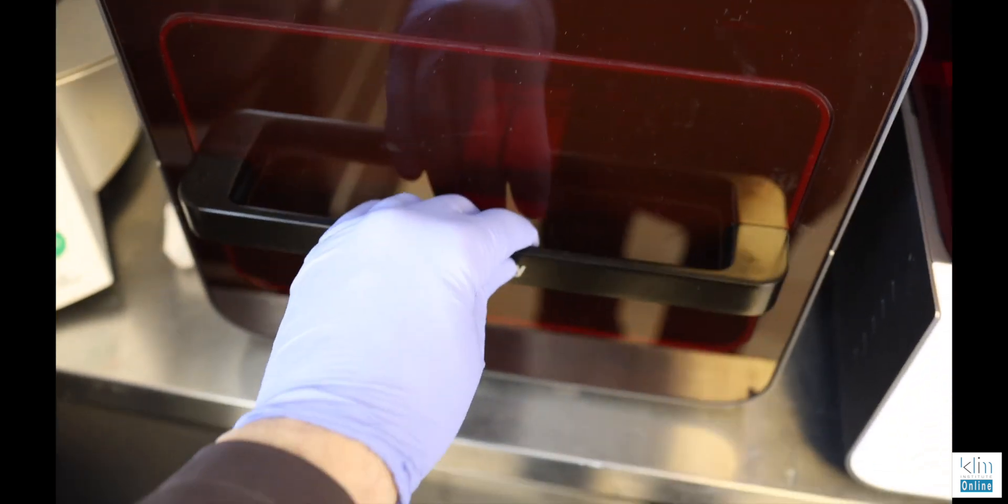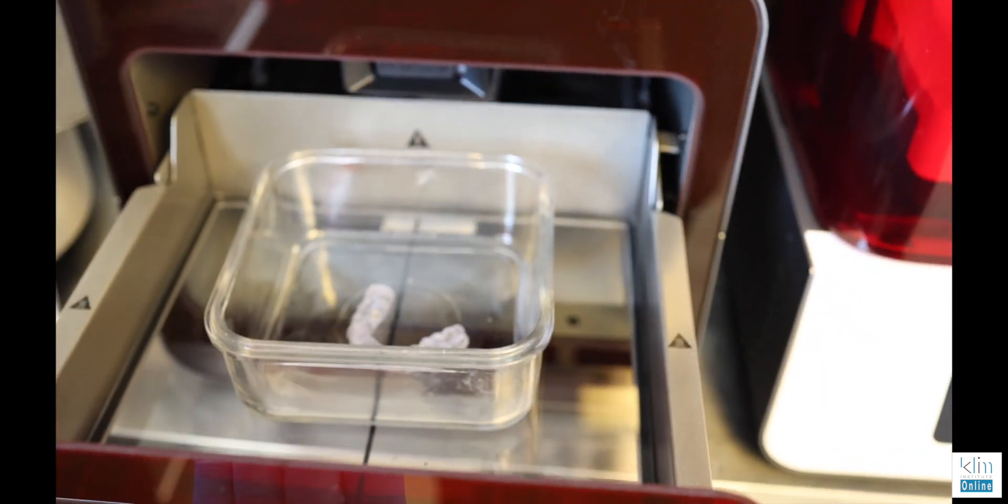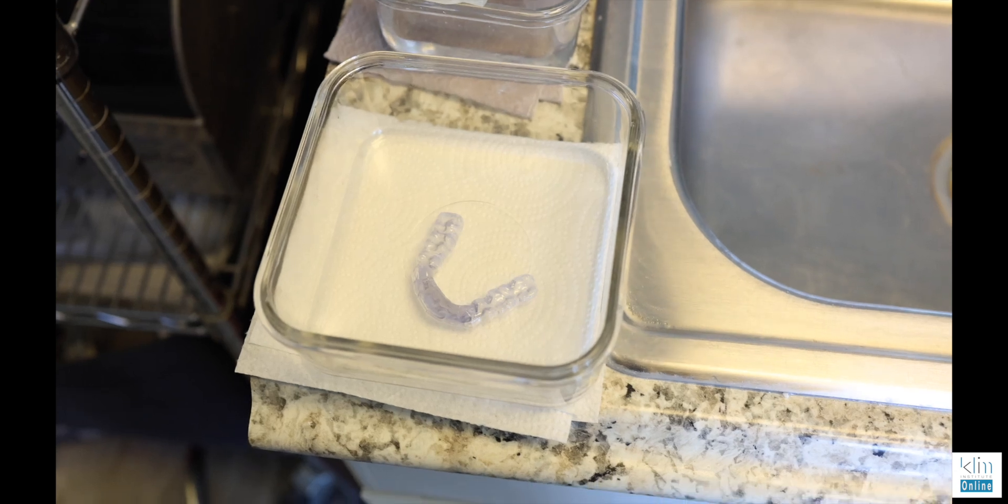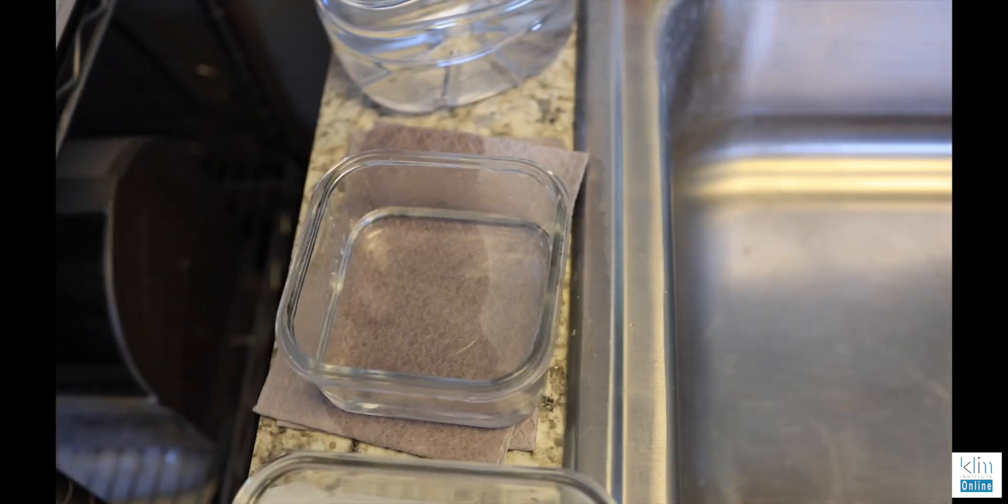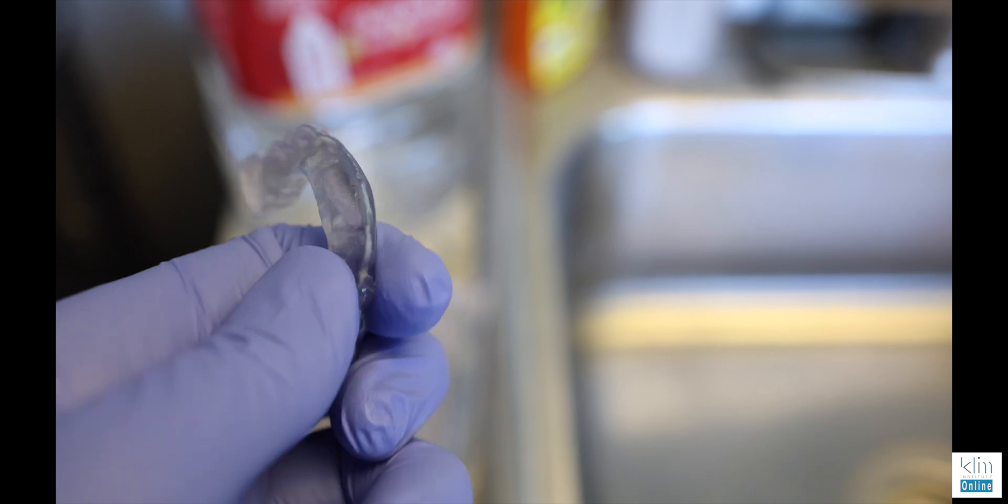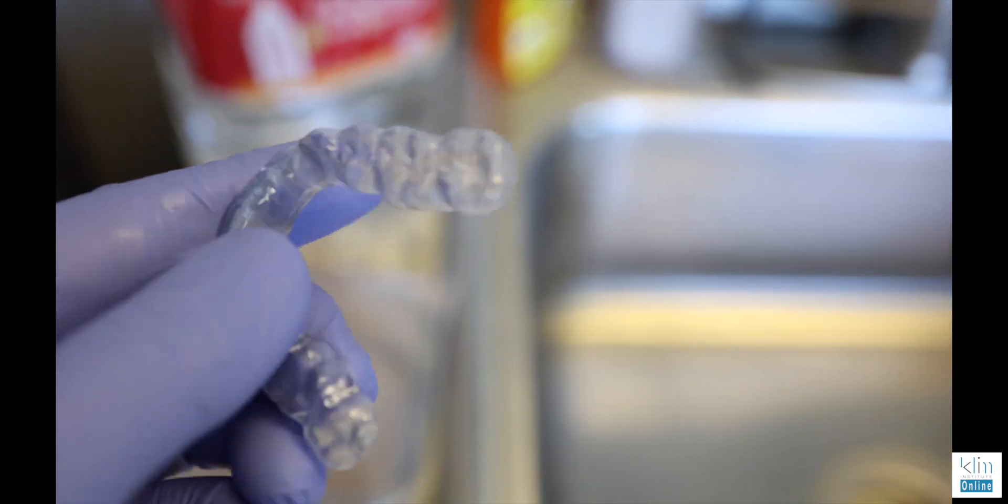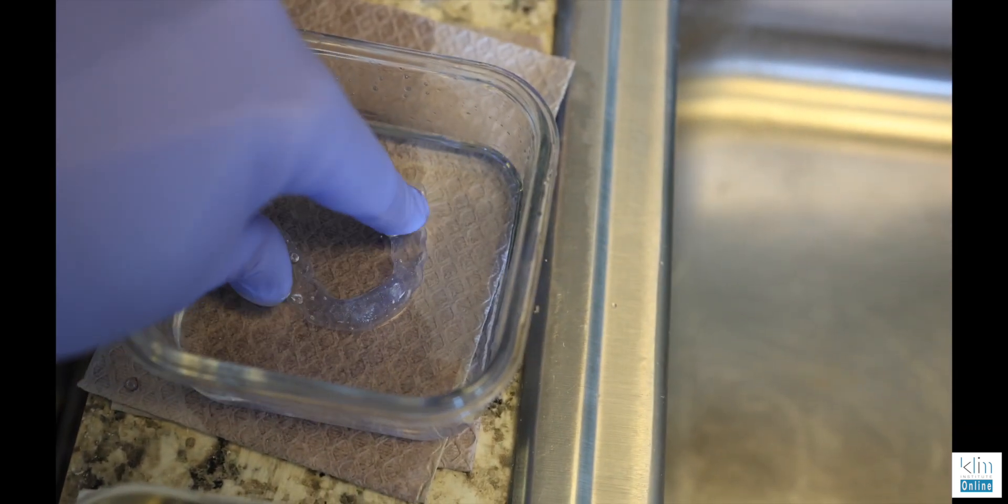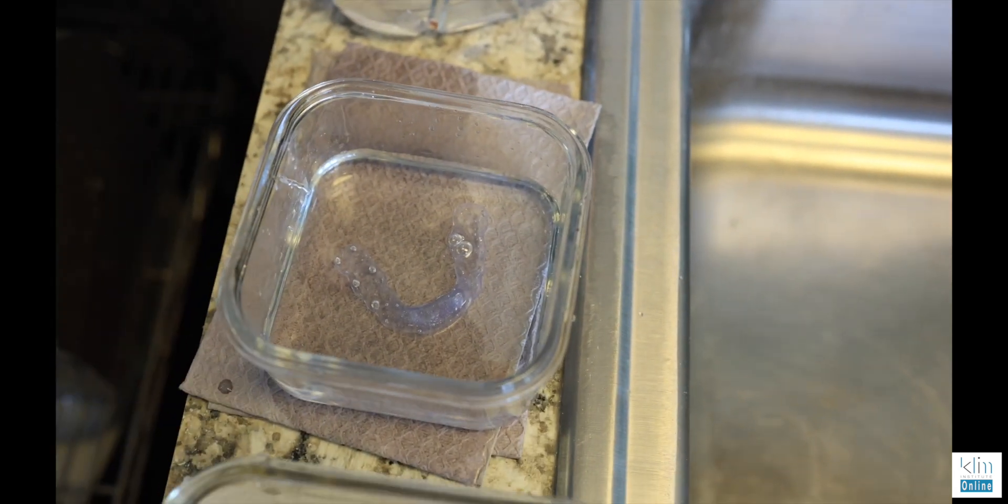Following the first cure, we're going to take that appliance and transfer it over to another ceramic container with glycerin in it and do a second cure. What the second cure is for in the glycerin is to remove the oxygen inhibited layer, and this appliance will result with a high gloss finish without any polishing.